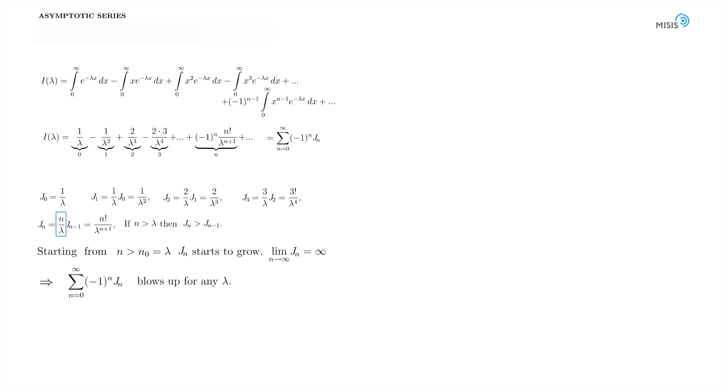So the terms of the series are unbounded, but that means that the sum diverges for any finite lambda. Before analyzing what to do with it, let's think how it happened.